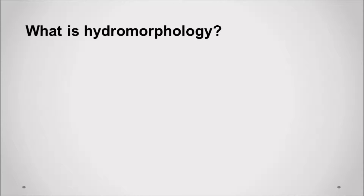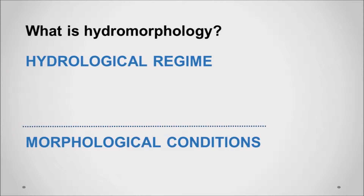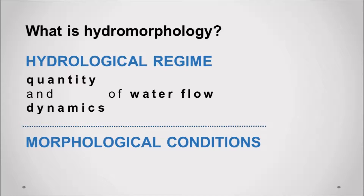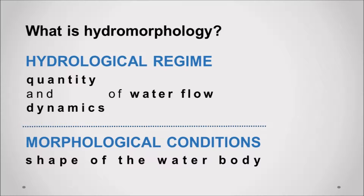What is hydromorphology? Hydromorphology brings together two subjects: hydrological regime and morphological conditions. Hydrological regime deals with the quantity and dynamics of water flow, while morphological conditions refer to the shape of a particular water body — for example, river or channel width, depth and slope variations, bed structure and substrate, and riparian zone and floodplain structure.